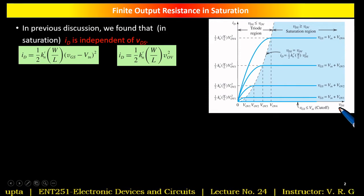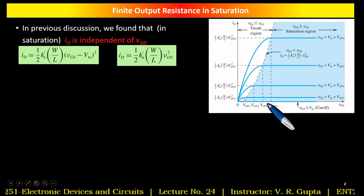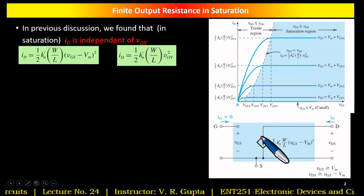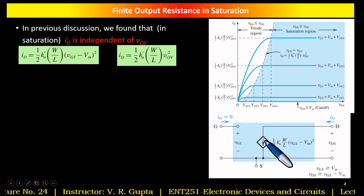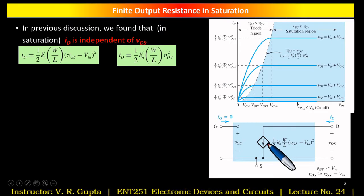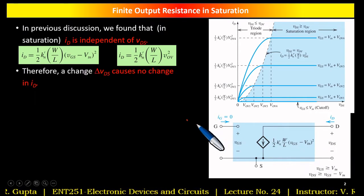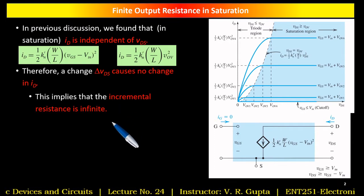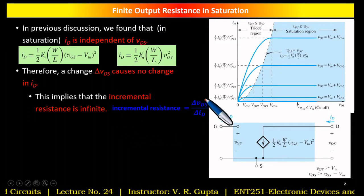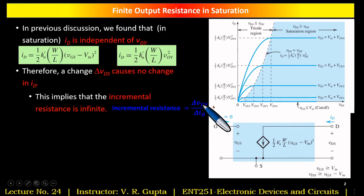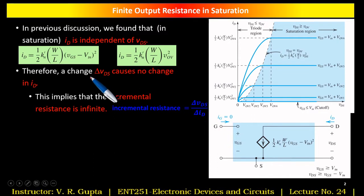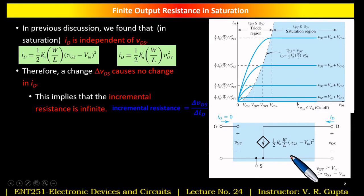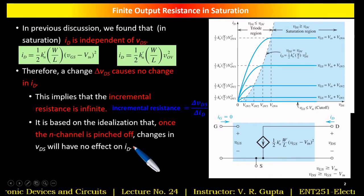In the ID versus VDS characteristic curves, in the saturation region, even though we increase VDS, ID remains constant. Similarly, in the large signal equivalent circuit, the dependent current source depends on VGS but is independent of VDS. Therefore, a change delta-VDS causes no change in ID, implying the incremental resistance is infinite. This ratio delta-VDS / delta-ID will be infinite, so there is no resistance in parallel with the current source.